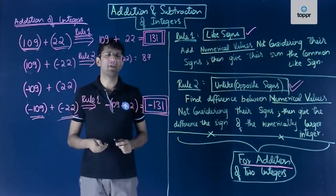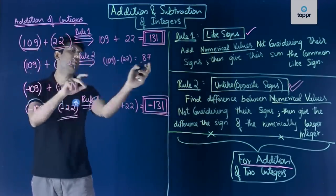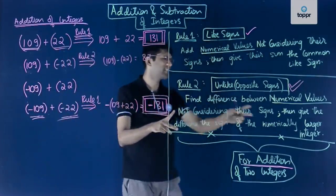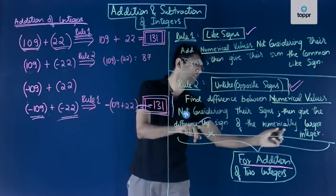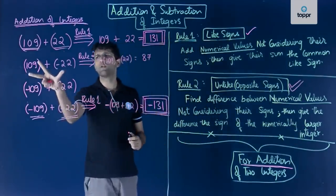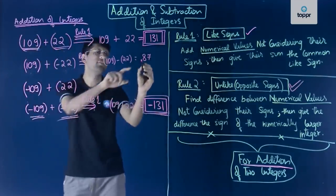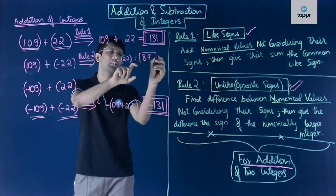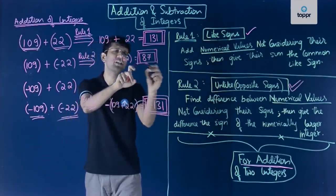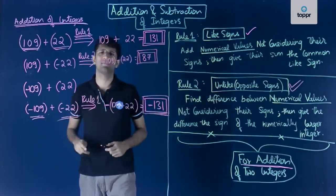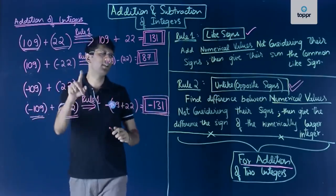We have found the numerical difference is 87. The next step is to give this difference the sign of the numerically larger integer. In this case, 109 is larger and its sign is plus. So we give the difference a plus sign, and the answer is +87, written simply as 87. So 109 + (−22) = 87, using rule two.